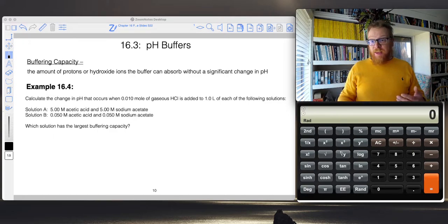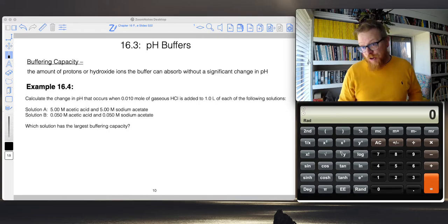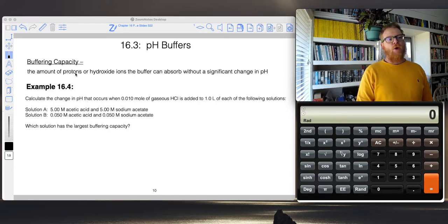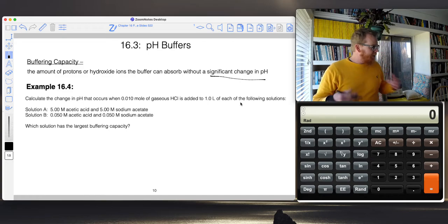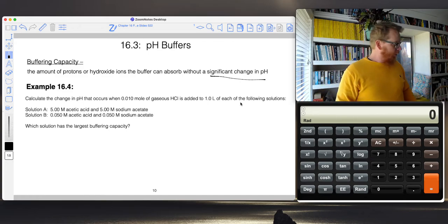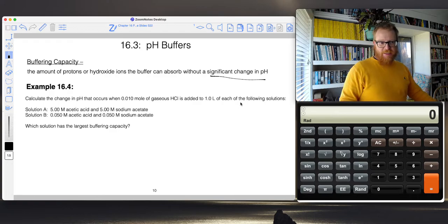As it turns out, the more of those we have, the larger our buffering capacity is. We can define that as the amount of protons or hydroxide ions the buffer can absorb without a significant change in pH. That's a little qualitative, but hopefully with this example, this will become obvious.